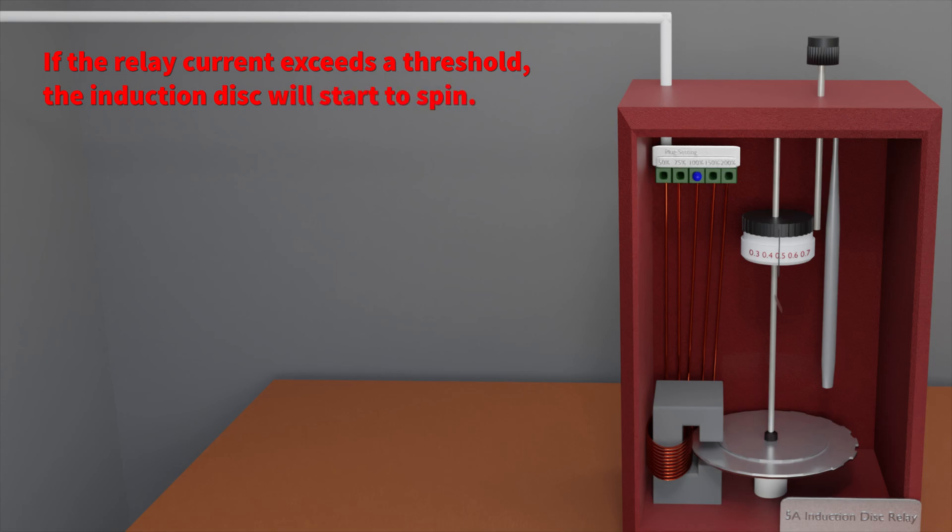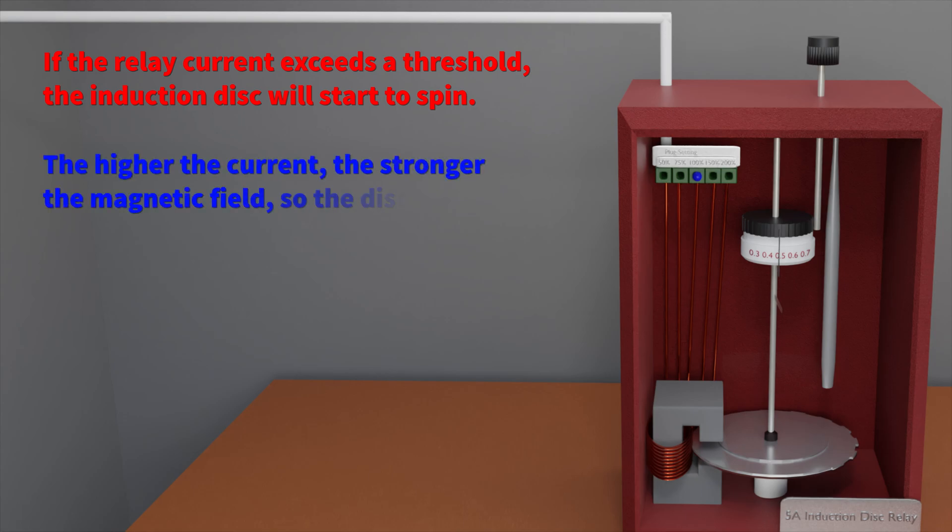Now we don't want the breaker to operate under normal conditions so there's a threshold beyond which the relay will operate. And the higher the fault current, the higher the relay current and the stronger the deflecting force on the induction disk will be. So the relay will operate faster for higher fault currents.